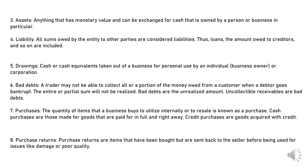3. Assets: Anything that has monetary value and can be exchanged for cash that is owned by a person or business in particular. 4. Liability: All sums owed by the entity to other parties are considered liabilities. Thus, loans, the amount owed to creditors, and so on are included.